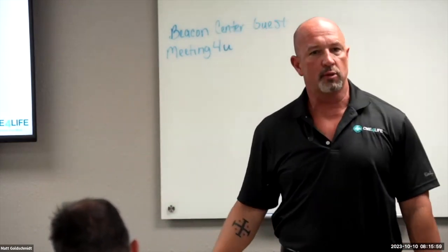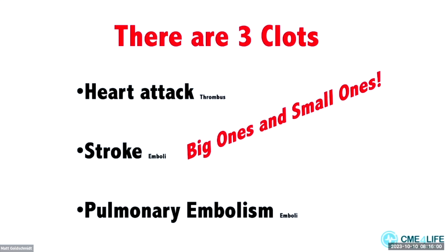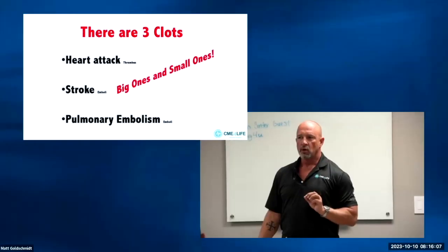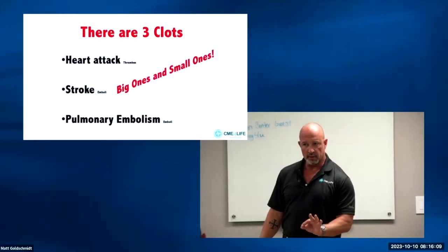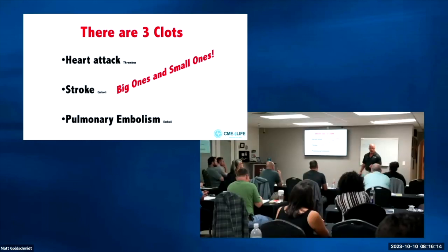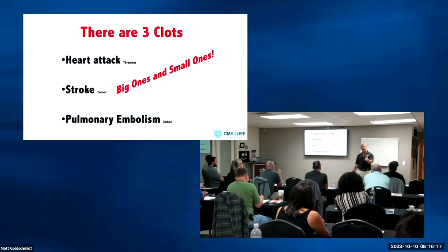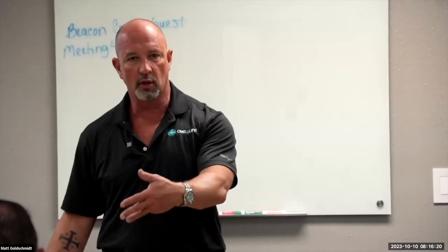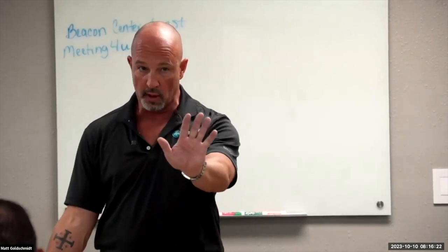We have big ones and small ones in each category. Do we agree we have a big stroke and a small stroke? So we have a CVA and a TIA. When a big or small stroke comes in, how do we know initially which one it is? The answer is, we don't know initially — because the difference between a CVA and a TIA is resolution of symptoms. So when they first come in, they look exactly the same.